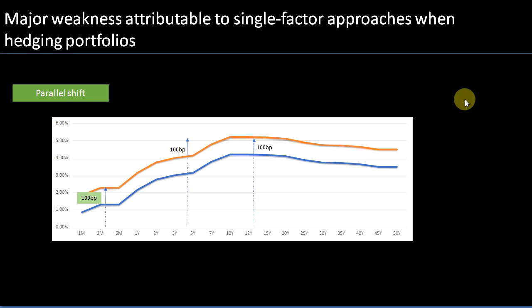As you can see in this diagram, when we talk about parallel shifts, the short-term tenors such as one month and three month, the long-term tenors such as 30, 40, or 50 year, and even medium-term tenors such as 7, 10, or 12 year — they all go through a parallel shift. In other words, we apply a one basis point shift across all tenors and then calculate the DV01.